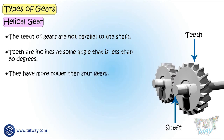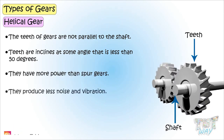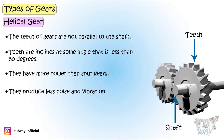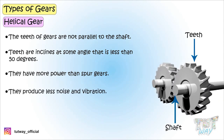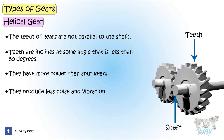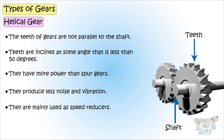Helical gears have more power than spur gears and they also produce less noise and vibration. Their main function is to reduce speed.